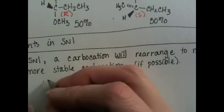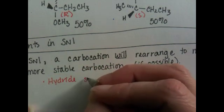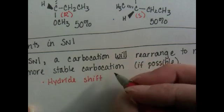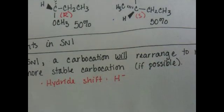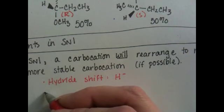One way is called a hydride shift. And in hydride shift, you see an H minus, a hydride ion, moving in the molecule to make the more stable carbocation.